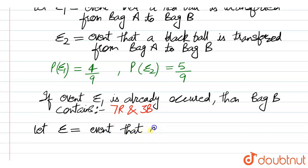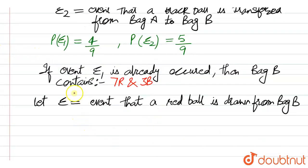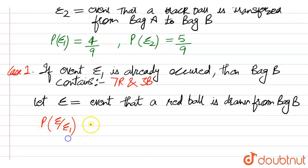Let E denote the event that a red ball is drawn from bag B. In case one, the probability of E given E1 has already happened would be equal to: we have a total of 10 balls and out of them seven are red, so this is 7 by 10.